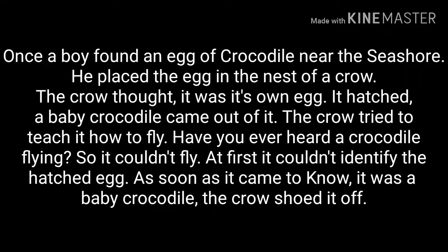We say 'a boy' and 'an egg.' Why do we use 'a' before boy and 'an' before egg? Boy produces a consonant sound at the beginning, whereas egg produces a vowel sound at the beginning. So before 'boy' we use 'a,' and before 'egg' we use 'an.'